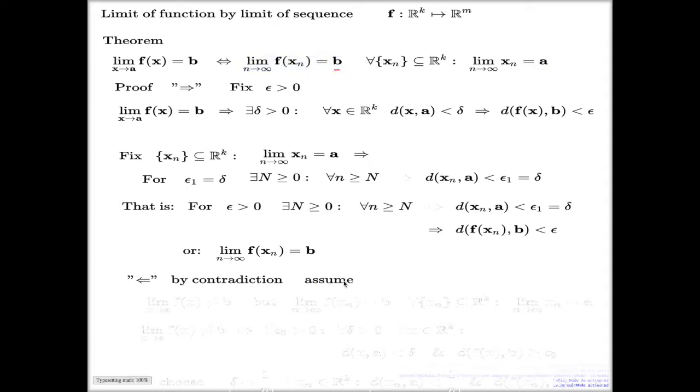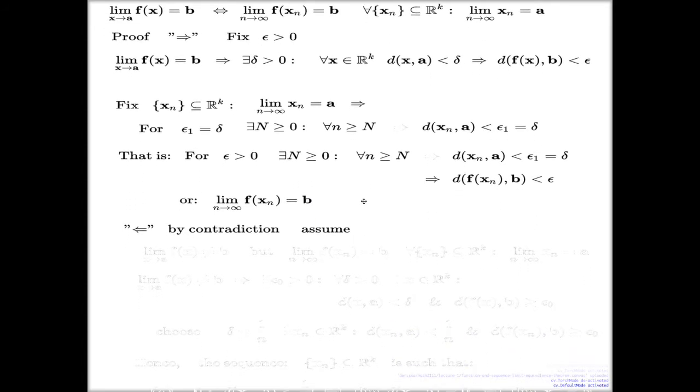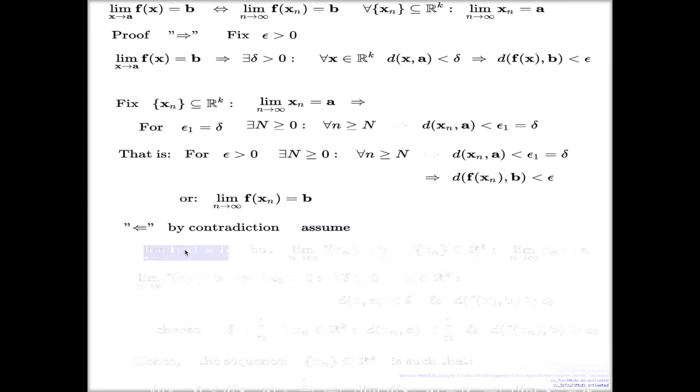We assume that limit of f of x not equal b, but at the same time, limit of xn equal b for every sequence converging to a. That's the setup of the proof by contradiction, and I want to come up with something wrong, a contradiction in this setup. I'm going to interpret what happens when limit not equal b.